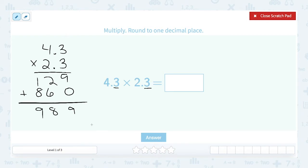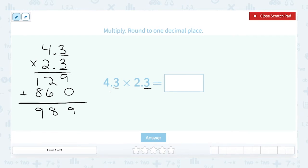Now this is where the decimal comes in. I go back up to the original problem and I count up the total number of decimal places in my two factors. There's one in this factor and one in this factor. So there's two total decimal places.